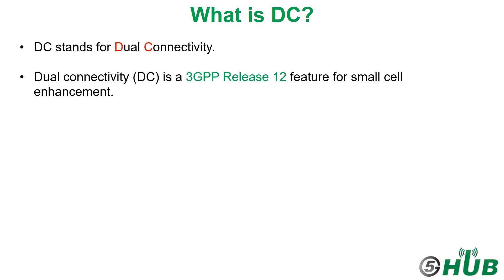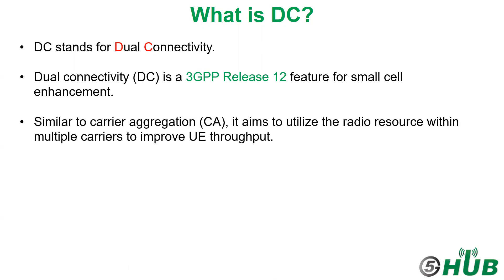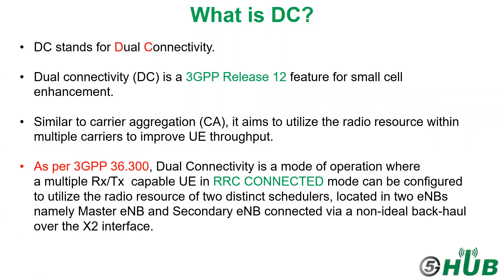It's similar to carrier aggregation as it aims to utilize the radio resources within multiple carriers to improve the user equipment throughput. As per 3GPP, dual connectivity is a mode of operation where a multiple receiver and transmitter capable user equipment in RRC connected mode can be configured to utilize the radio resources of two independent schedulers, located in two eNodeBs in case of Release 12 — namely master eNodeB, which handles control and data, and secondary eNodeB for data only — connected by non-ideal backhaul over the X2 interface.